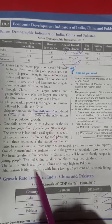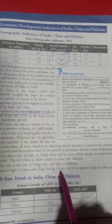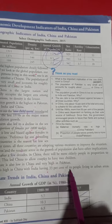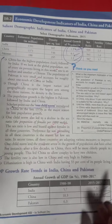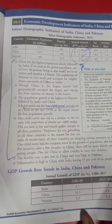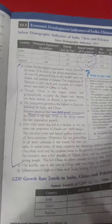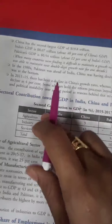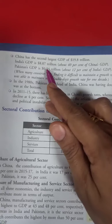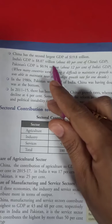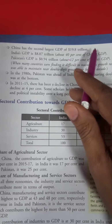Urbanization is the highest in China. In India, about 33% of the population lives in urban areas. Regarding GDP growth trends, India's GDP is approximately 8.06 trillion, which is about 40% of China's GDP.